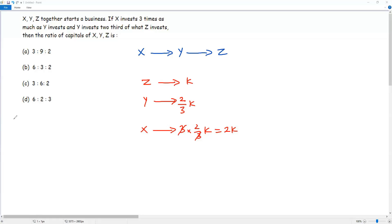Now I have the investments of all the three people X, Y and Z in terms of K. Now I have to find the ratio of the capitals. Let's find the ratio of the capitals. That is X to Y to Z is equal to.